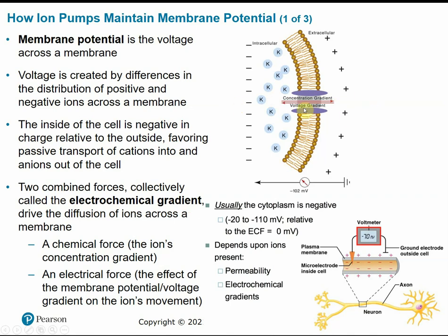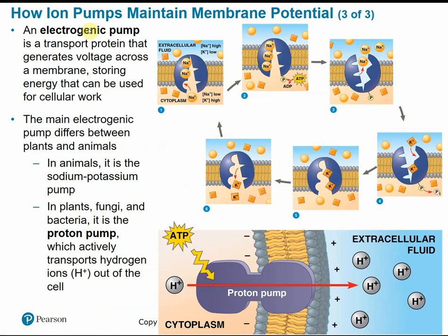This resting state favors passive transport — natural diffusion of cations into the cell and negatively charged anions out of the cell. These two combined forces — the concentration gradient and the voltage gradient — are collectively referred to as the electrochemical gradient, which drives the diffusion of ions across the membrane and helps regulate our membrane potential. Whenever we want to generate an action potential, an electrical or nerve impulse, we open the sodium channels or cation channels, allowing positively charged cations to flow inside the cell, depolarizing or flipping the charges, and that's what generates the electrical impulse that travels down the axon of a neuron.